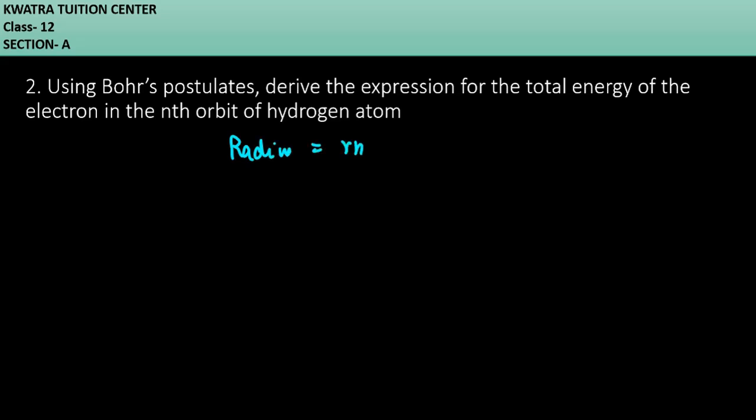Now here we have the formula. What is related to centripetal force? Centripetal force is mvn square over Rn. Why are we putting n here? Because they have said and generalized that you have to find out for nth orbit.